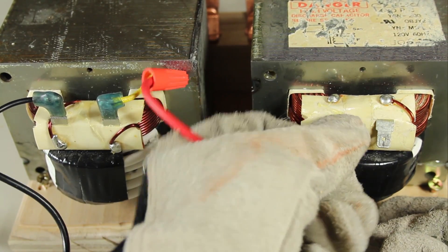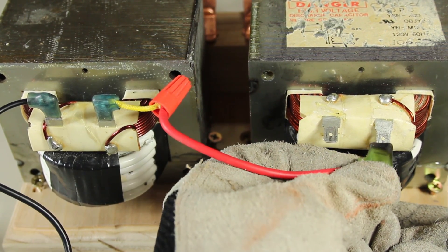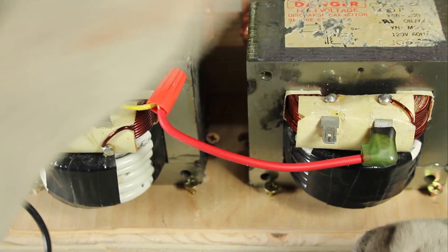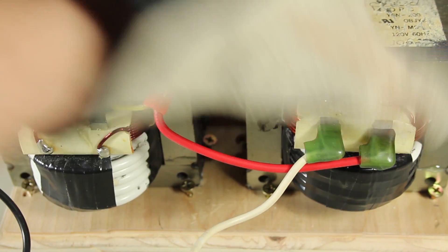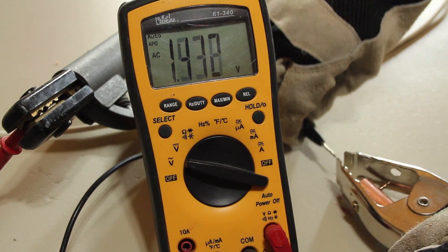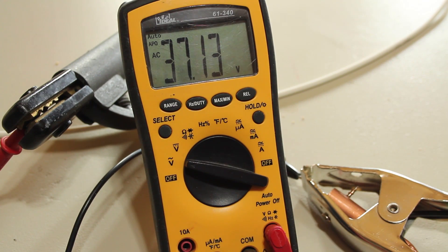To fix this problem, let's just turn off the power, and remove the connections to one of the transformers. It shouldn't really matter which one. Then we simply switch the connections around. That's it. This time when we turn on the power and check the voltage, we've got 37 volts.